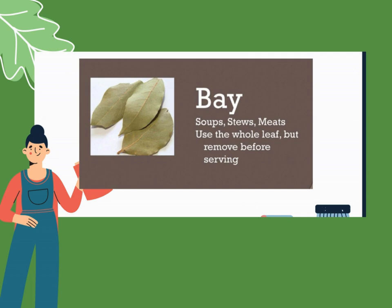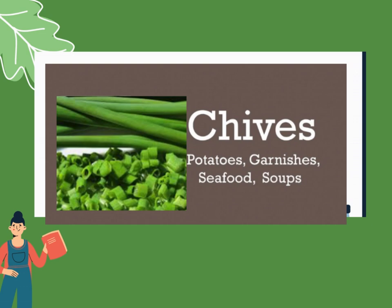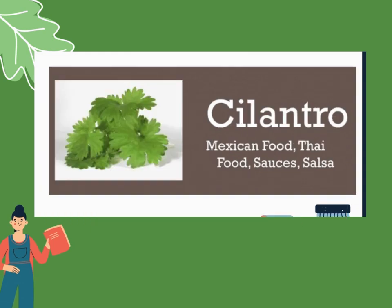Next, chives — ito yung dahon ng sabuyas na maliliit. Used for potatoes, as garnish, and for seafood and soup. Next, cilantro. Cilantro is used in Mexican food, Thai food, and sauces. You can also use this for salsa.